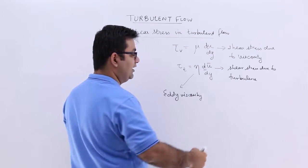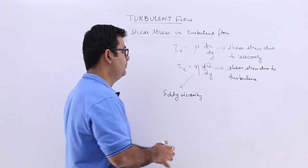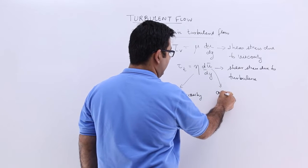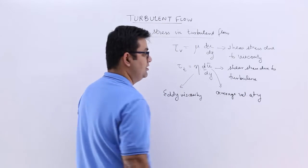That is the viscosity developed due to the turbulence as eddy currents. U bar is the average velocity at distance y.